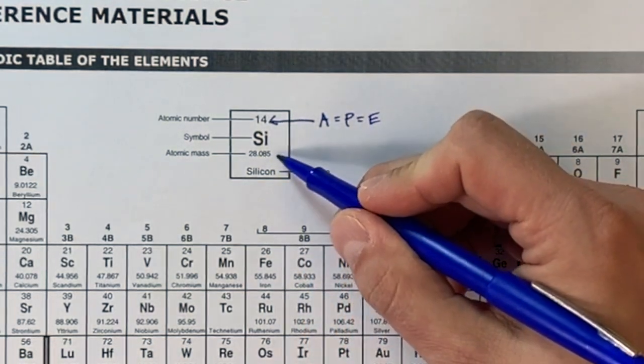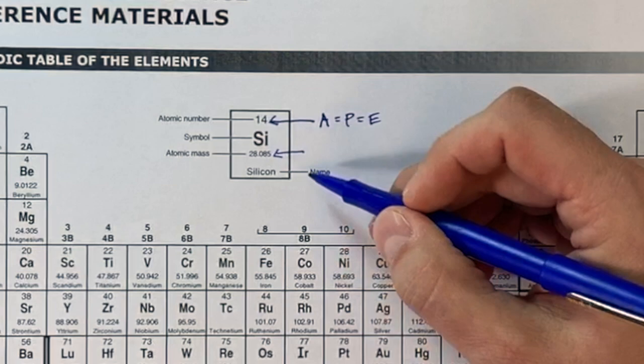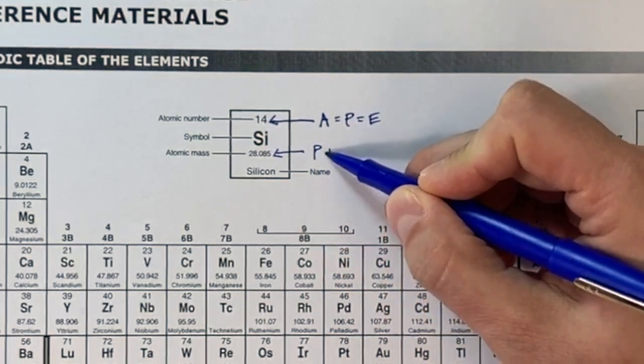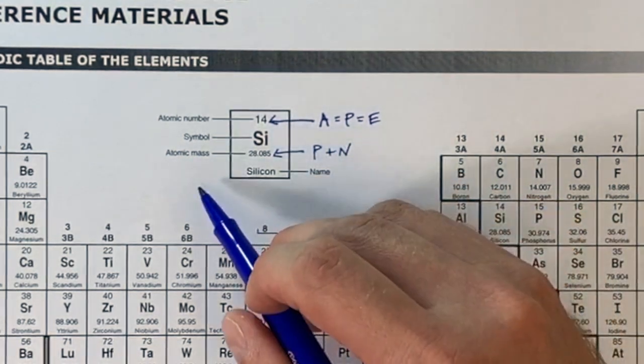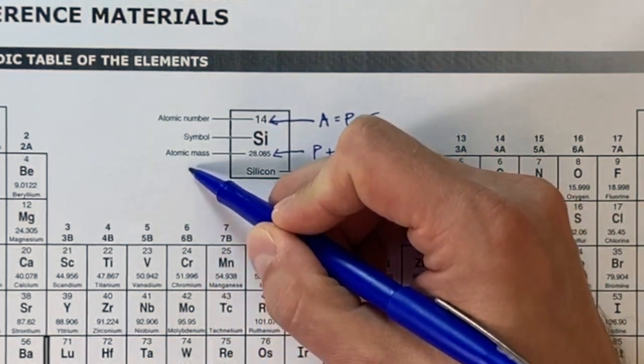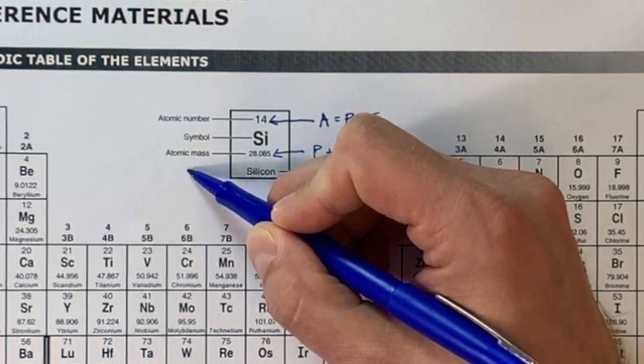So we're going to put A equals P equals E there. The atomic mass is equal to the number of protons plus the number of neutrons. If you're given any one of these pieces of information, you'll be able to use these formulas to find out.